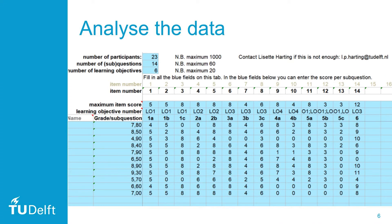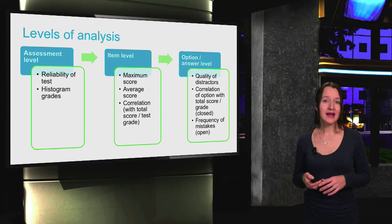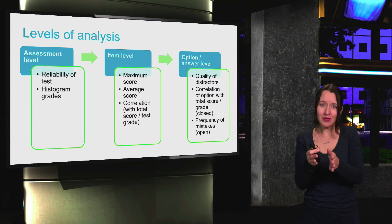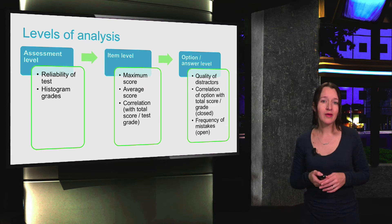This is what the data for an exam would look like if broken down per question or item — you can see the questions divided across different learning objectives and the maximum score attainable. When analyzing exams or assignments, there are three levels of analysis. At the assessment level, we explore reliability of the whole test and examine the histogram of grades. At the item level, we explore the maximum, average, and correlation. And at the option or answer level, we look at the quality of distractors and the correlation between them.